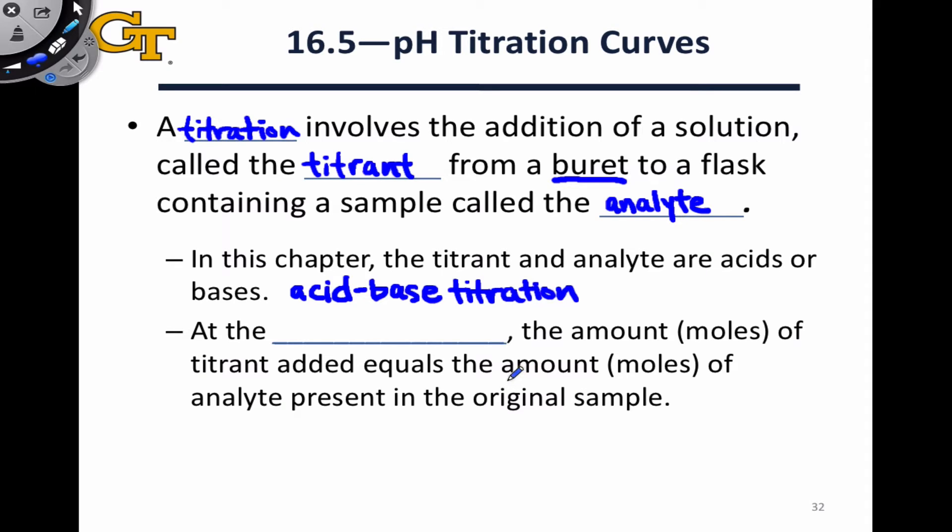The goal of any titration is to determine an unknown amount or number of moles of a substance in the analyte. To do this, we add the titrant, driving the reaction forward until we reach a point, usually indicated by a visual change, but not always, it can also be determined quantitatively, as we'll see in this chapter, where the added titrant has just consumed all of the analyte.